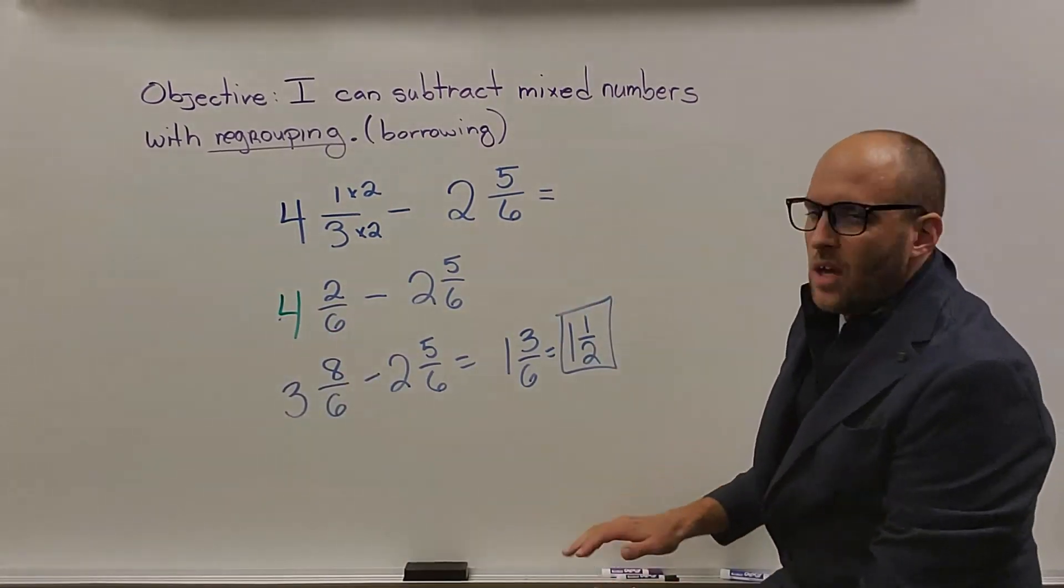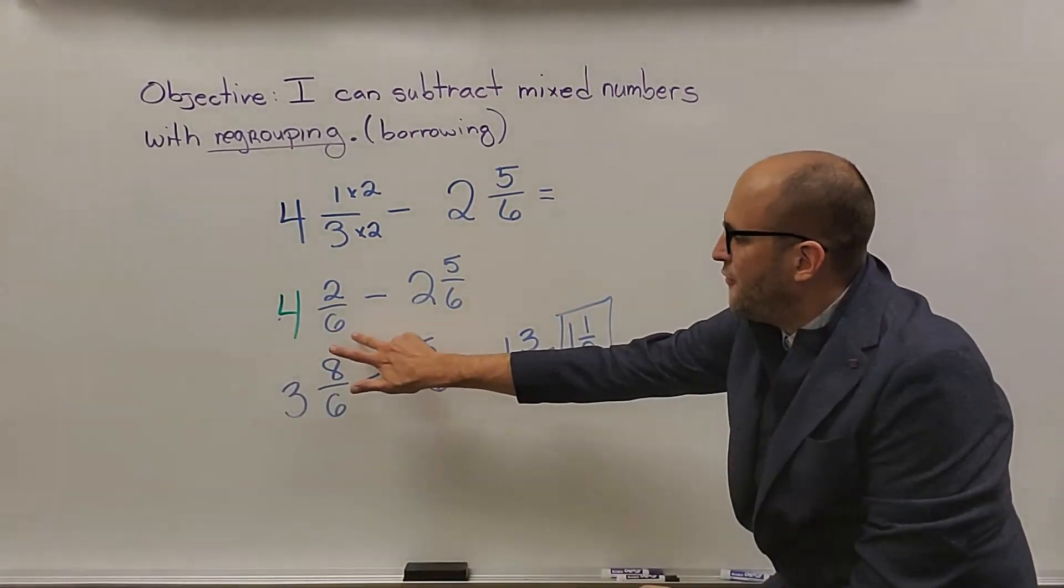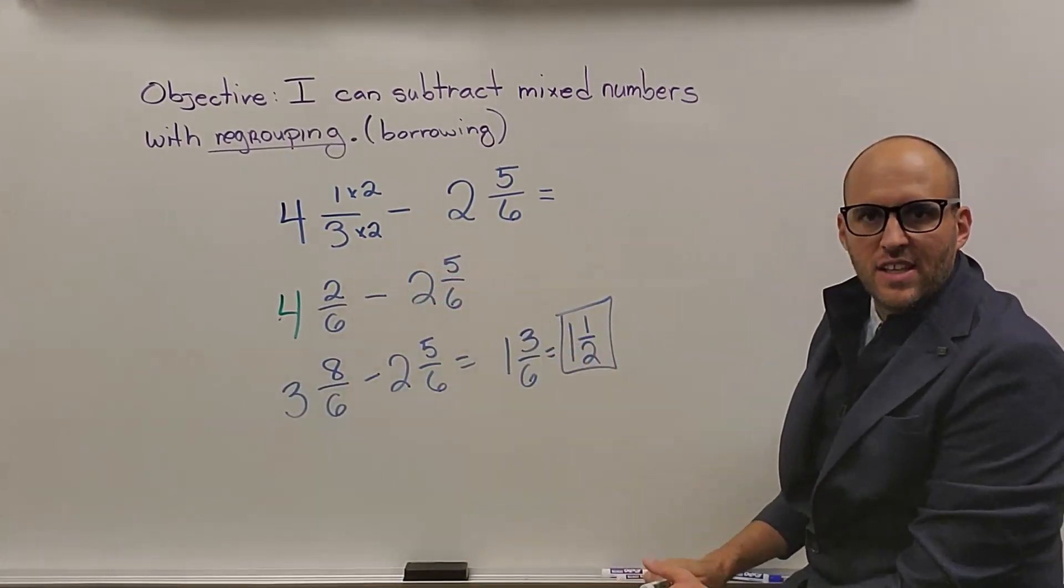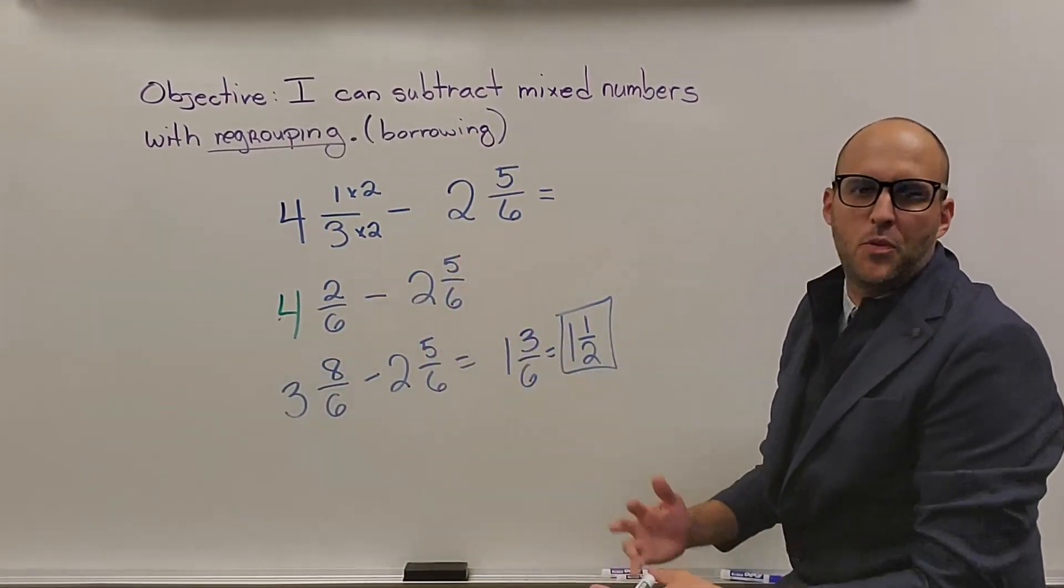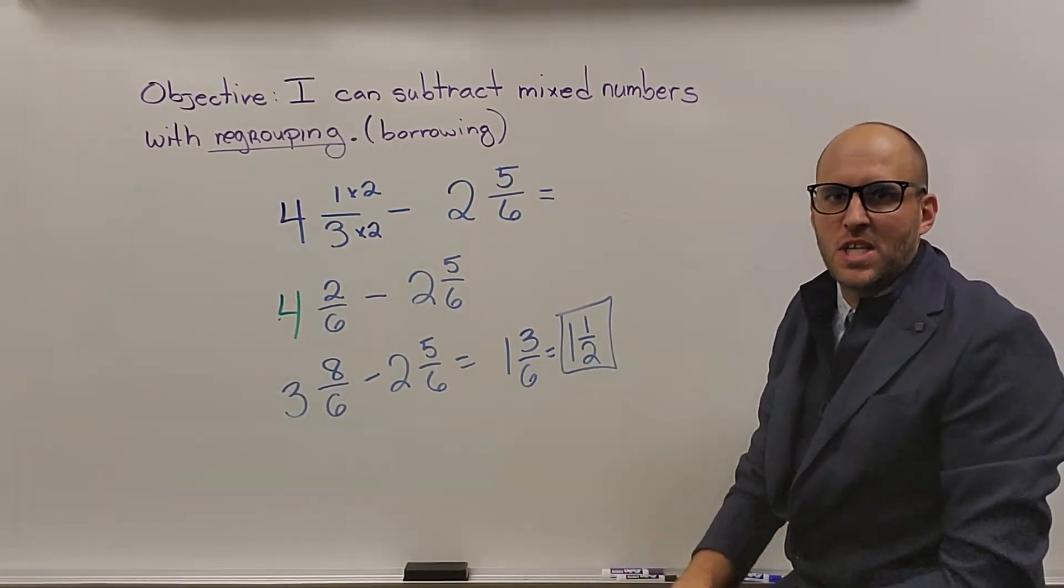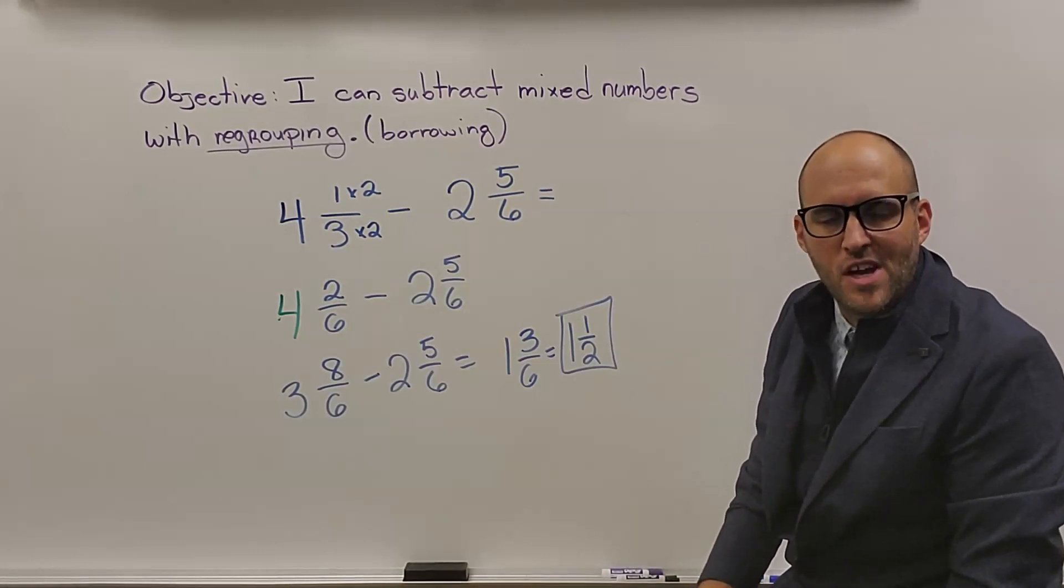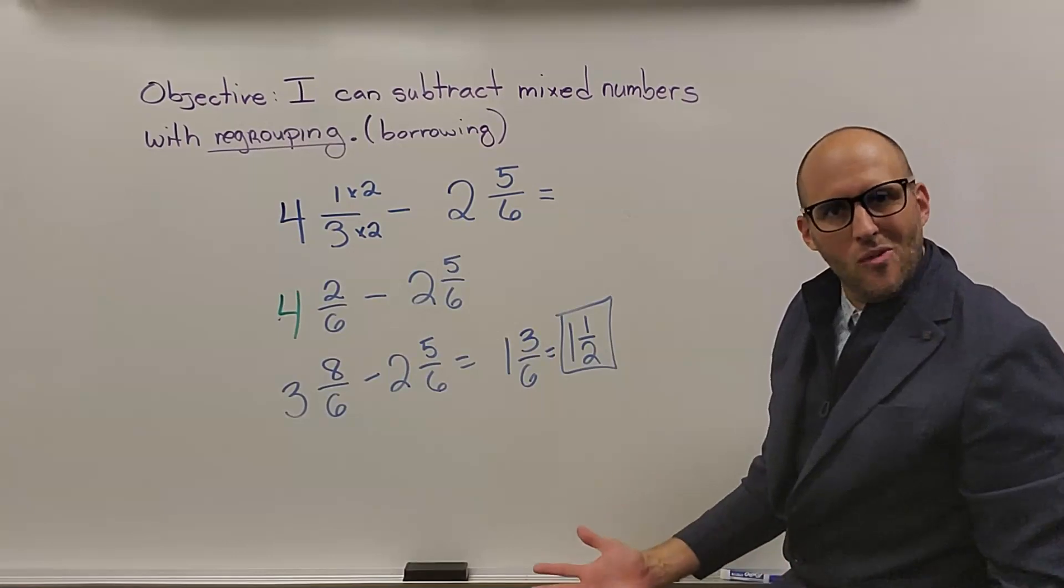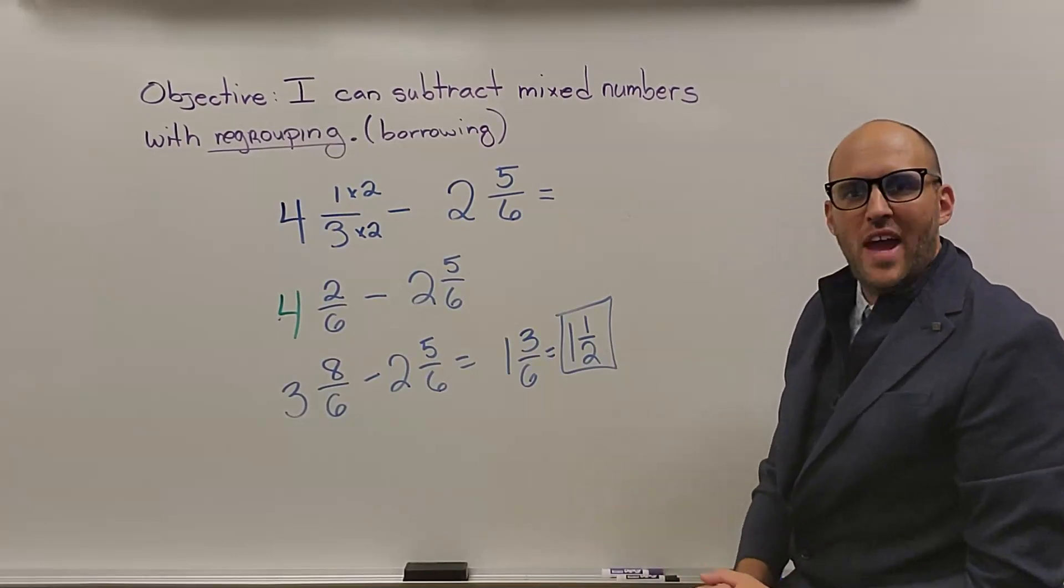Now if you notice here, you subtract with the fractions first. You can't subtract 2 minus 5. A lot of kids will just do 2 minus 5 and come up with 3. That's not 3. That's negative 3. Now if you're in 6th or 7th grade and are doing negative numbers, you know what I'm talking about. But if you're in 4th or 5th grade, you don't want negative numbers right now. So you have to borrow.